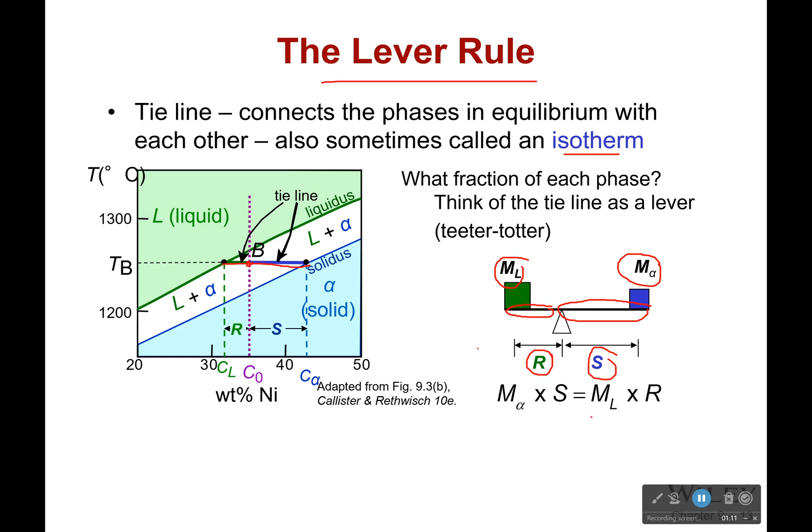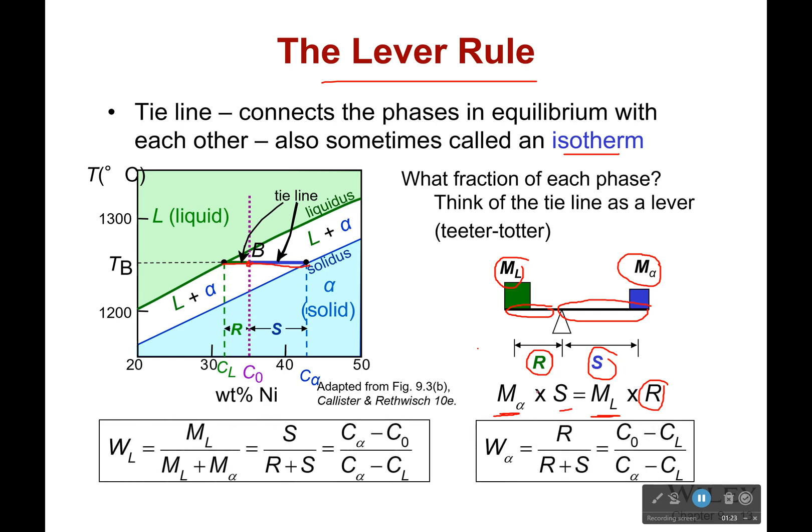So looking at this, the mass of the liquid times R has to be equal to the mass of the alpha side times S. And so this is where that comes from, this is where this comes from because I'm trying to find the weight fraction of the liquid. Well, it's going to be equal to the mass of the liquid over the total mass, which I don't know.